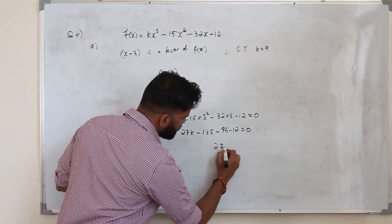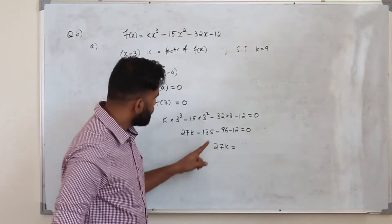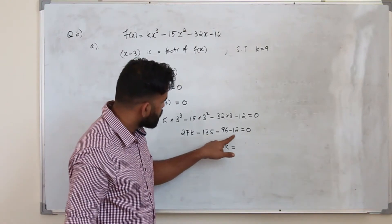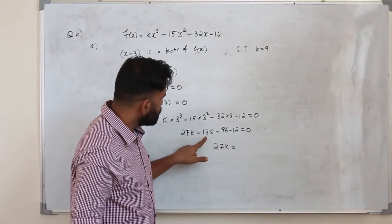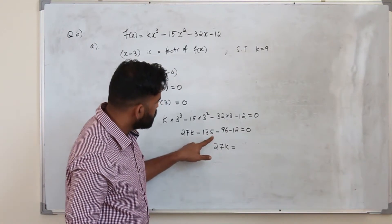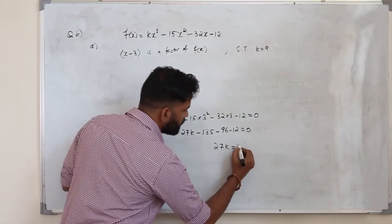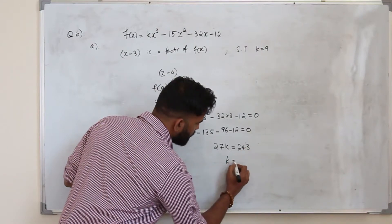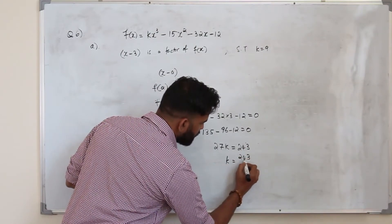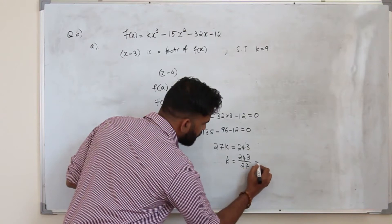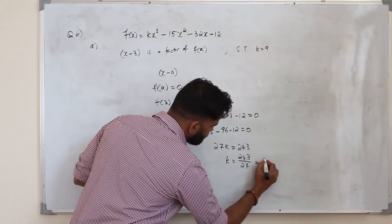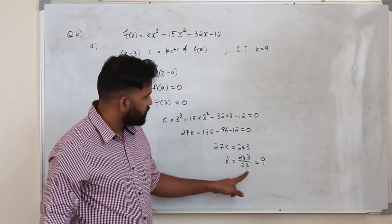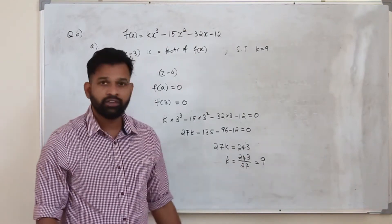27k equals 135 plus 96 plus 12, which gives 243. So k is 243 divided by 27, which equals 9. Since 9 times 27 is 243, that confirms k equals 9.